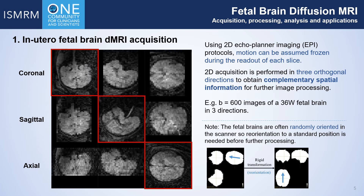Fetal brain MR images are often obtained in three orthogonal directions. In 2D acquisition, motion can be assumed frozen during the readout of each slice. This enables post-processing to reduce motion artifacts utilizing the 2D slices. Images in three directions provide complementary spatial information for the post-processing steps. Note that fetal brains are randomly oriented in the scanner, so we need to reorient the brains into a standard position using a rigid transform before further processing.